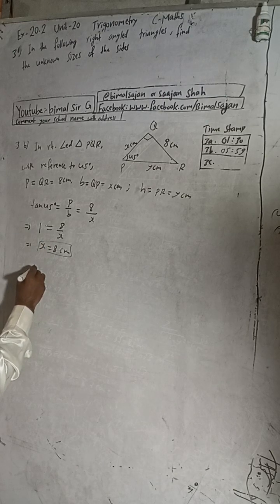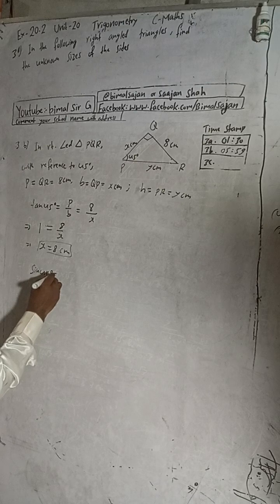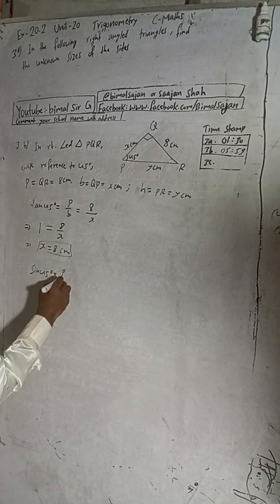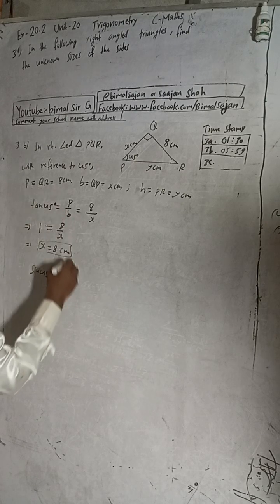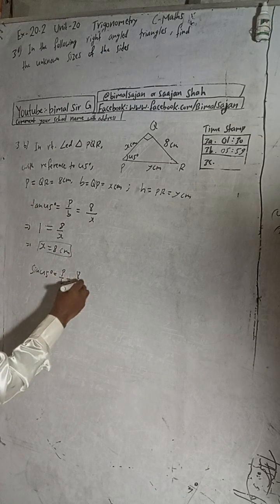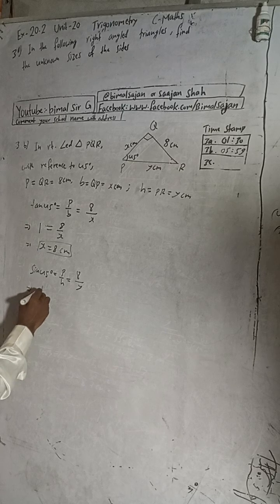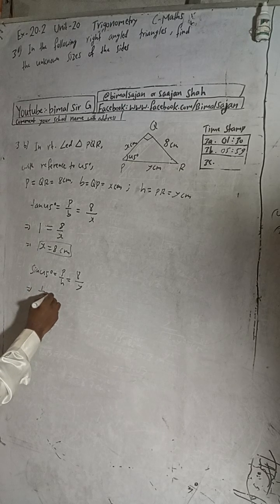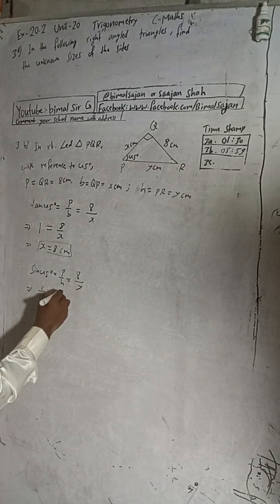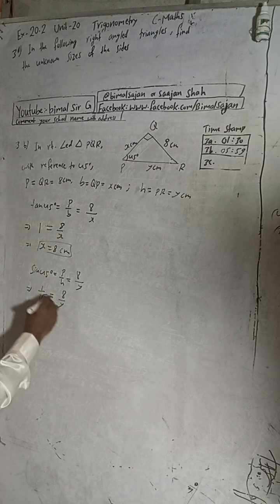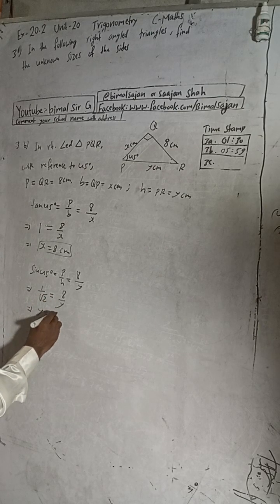To find the hypotenuse y, we use sin 45°, which is perpendicular over hypotenuse. So sin 45° = 8/y. Since sin 45° = 1/√2, we get 1/√2 = 8/y. Cross-multiplying gives y = 8√2.